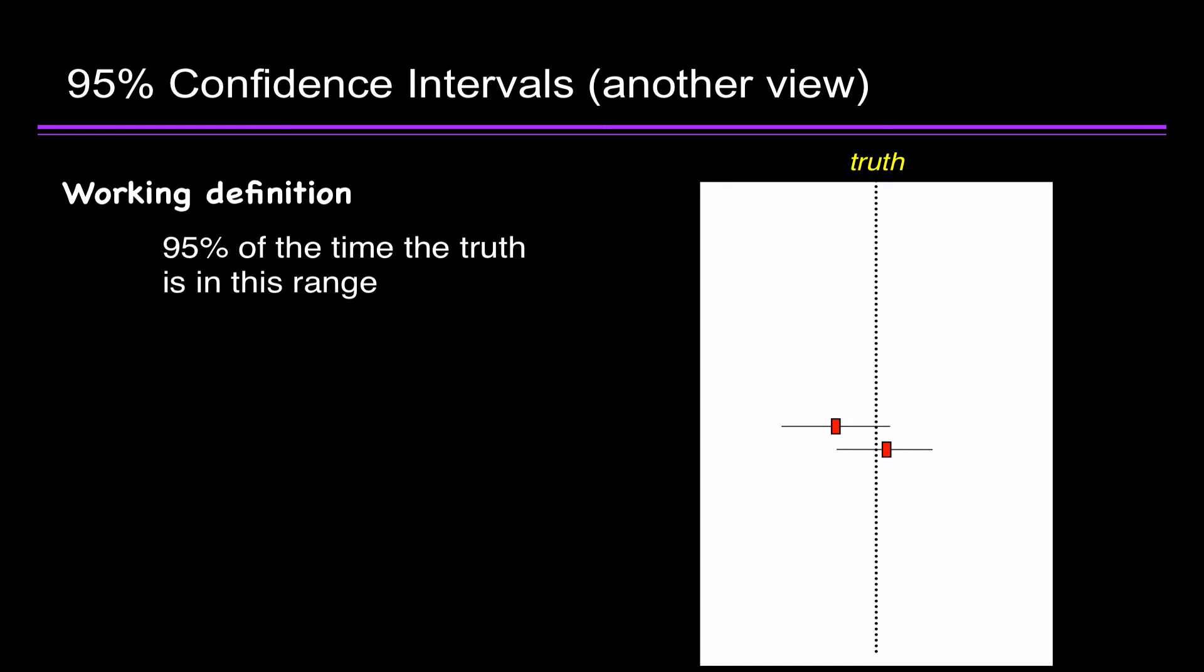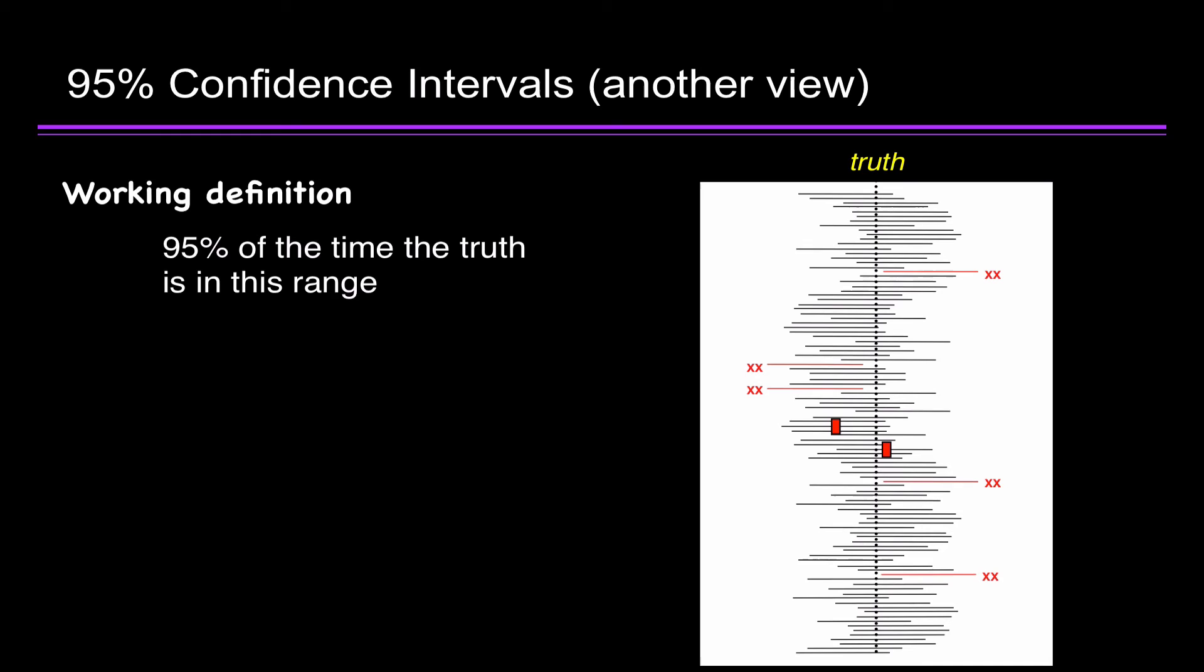Here's another study. And we didn't get quite as close to truth this time, but still, it's in the 95% confidence interval. Now we're doing the study a hundred times. Most of the time, the truth is in the confidence interval of the studies. But you can see those red lines, those red confidence intervals with double X's next to them, are five studies that did not include the truth. So the truth won't always be in the confidence interval, but most of the time it will be.